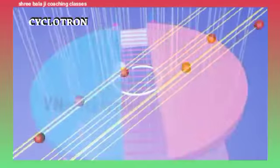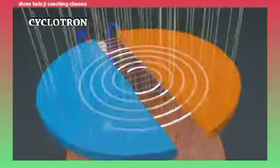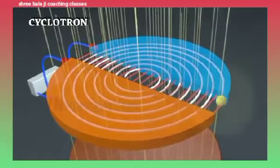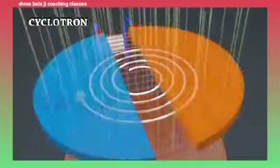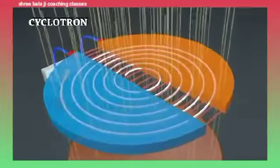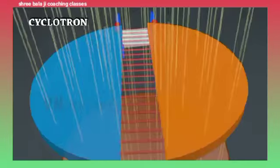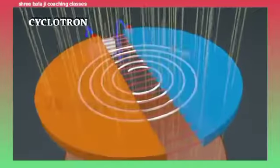A positively charged particle can be accelerated to high energy with the help of an oscillating electric field by making it cross the same electric field time and again with the use of a strong magnetic field.